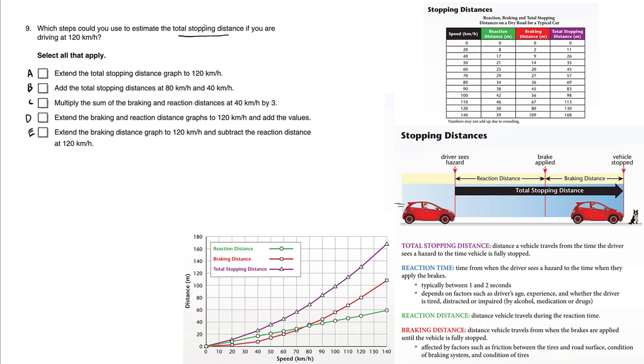Now we need to know what total stopping distance means. If you look at this diagram here, the total stopping distance is going to be the reaction distance plus the braking distance. The total is bigger than each of these individual distances.